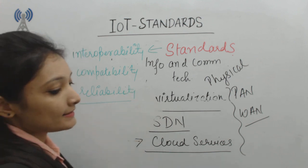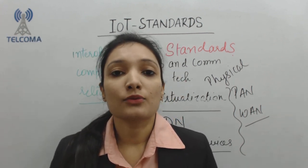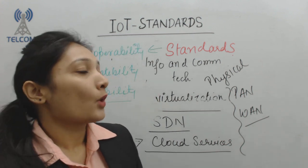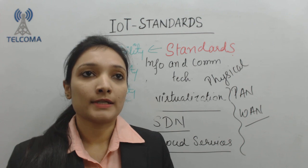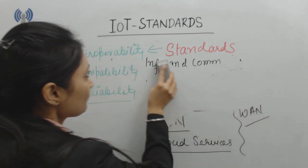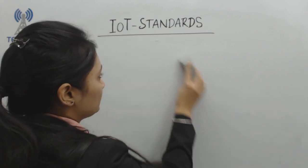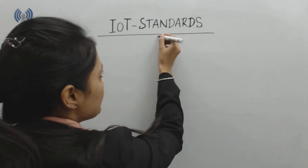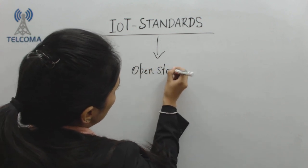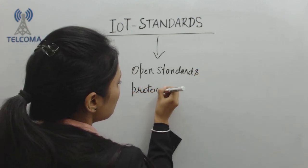That's why we need standardization for the Internet of Things, so that various devices can connect and exchange information without any restraint. There are different standardization bodies addressing the issues of interoperability — providing protocol stacks for IoT and open standards, so that it can be fully deployed.